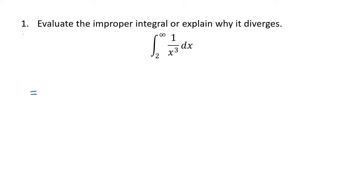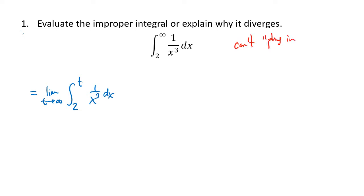So in this case, the integral from 2 to infinity of 1 over x cubed dx means the limit as t goes to infinity of the integral from 2 to t of 1 over x cubed dx. We definitely don't want to just launch into taking an antiderivative and then trying to plug infinity into that antiderivative — we can't ever plug in infinity. It's just not something that we can do because infinity is not a number. These first few examples will be relatively easy to figure out the limits, but as we go on to more complicated examples, the limits are going to be a little bit more challenging.